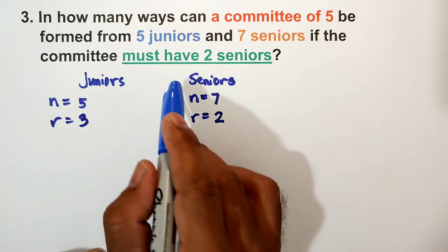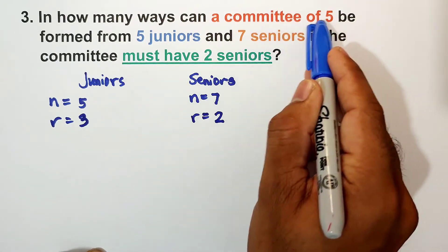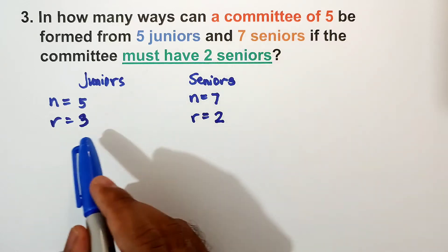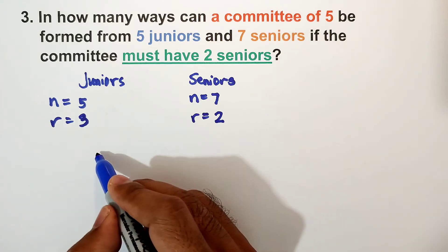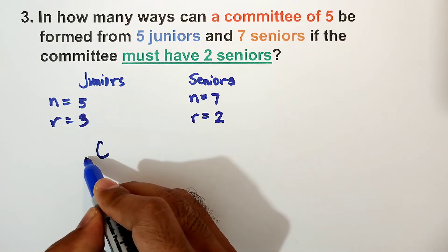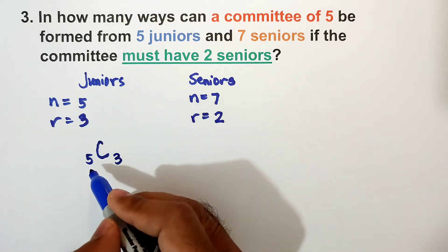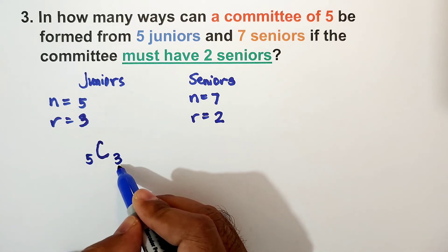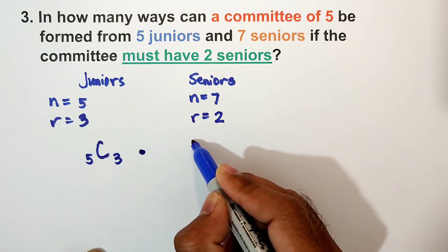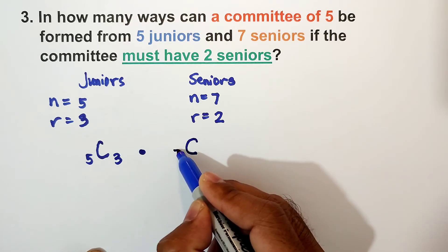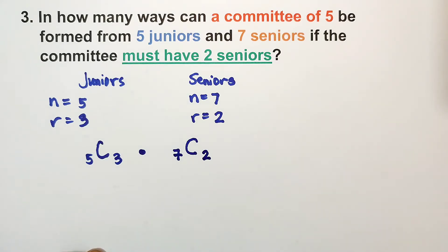Again, if there must be two seniors, since we need five committee members, juniors needed is three. Let us solve: combination of five taken three — juniors are five and we need three — times combination of seven seniors taken two.